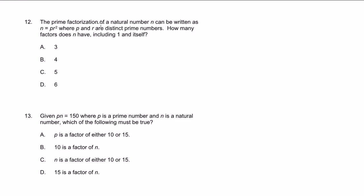Problem 12. The prime factorization of a natural number — that's just positive integers, though sometimes 0 is included depending on context. The prime factorization of a natural number n can be written as n equals p times r squared, where p and r are distinct prime numbers. How many factors does n have, including 1 and n itself?